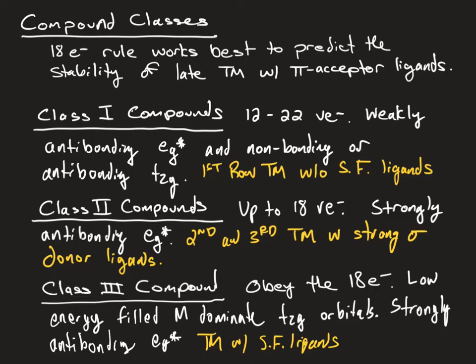Most stable organometallic compounds fall under class III-type compounds. An exception to this are square planar compounds, which fall under class II compounds. First-row transition metal compounds that are square planar are stable with 16 valence electrons, and this is because of the strongly anti-bonding dx²−y² orbital.